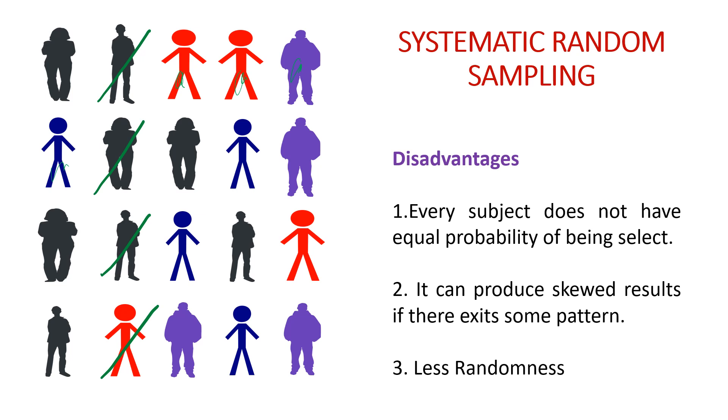It can produce skewed results if there exists some pattern. If in our population there is some pattern, after every fixed interval we have the same kind of member, then our selection will be skewed, our sample will be skewed. Also, in this there is less randomness in comparison to simple random sampling. Although we choose sample randomly, because we are using a fixed interval, that randomness is less in comparison to simple random sampling.